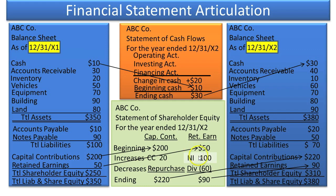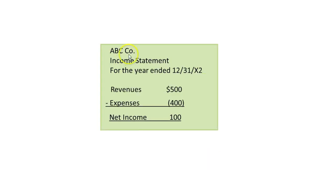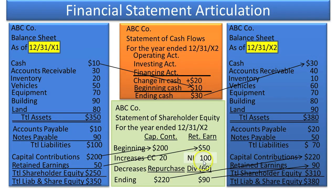The next thing owners would want to know is how we got this net income. That comes from the income statement for the year ended. The company brought in $500 of revenues, deducted the expenses that matched those revenues, and got net income of $100. So in the middle we have three statements — statement of cash flows, statement of shareholder equity, and specifically net income from the income statement.